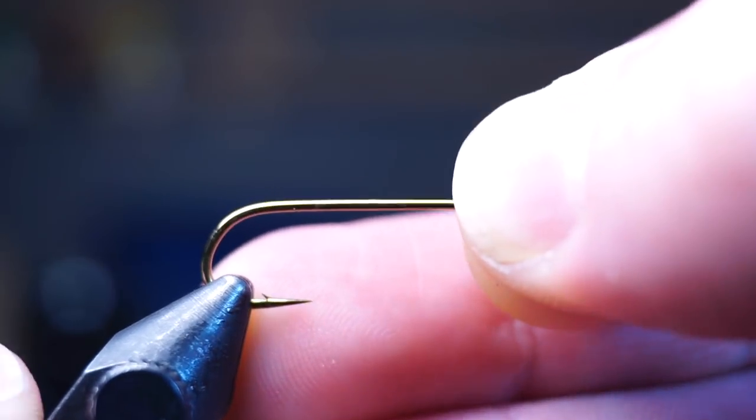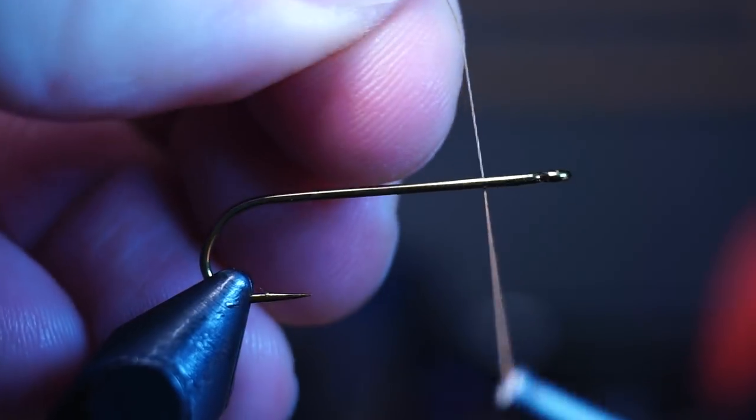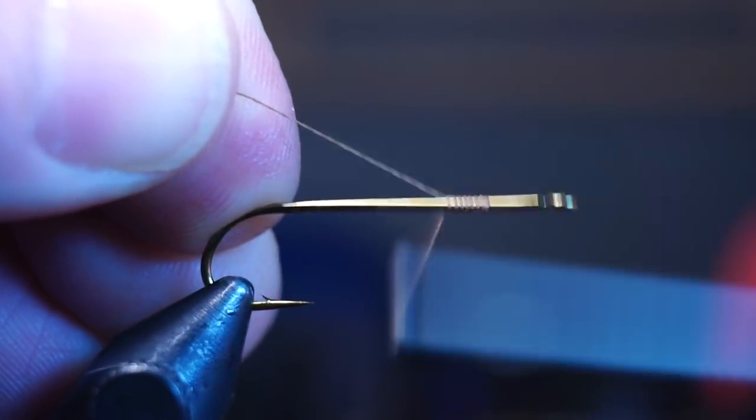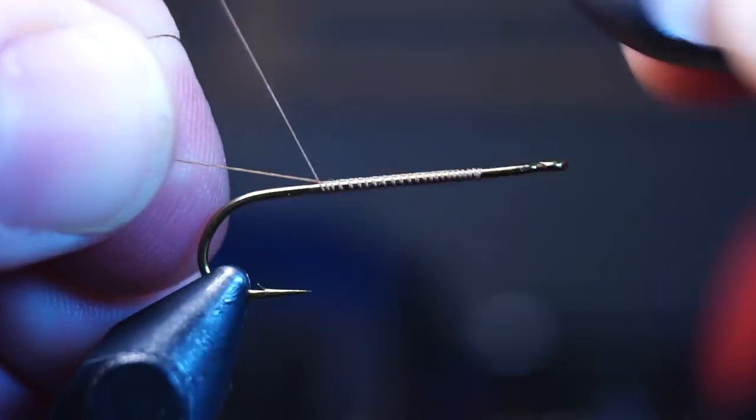Start by placing a streamer hook onto your vise, then start your thread a few hook eye lengths back from the eye of the hook, and wrap that back to the bend of the hook before trimming or breaking off the waste.